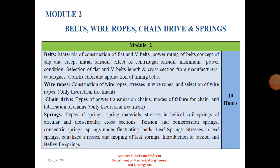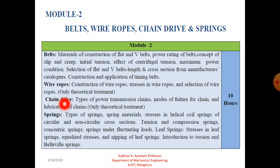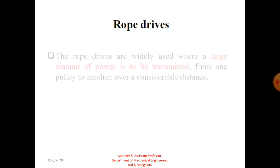Welcome to Design of Machine Elements 2, second module. Today we'll start with the new topic: design of wire ropes. We need to know about the characteristics of wire ropes, and the main things are construction of wire ropes, stresses in wire ropes, and selection of wire ropes for a particular application.